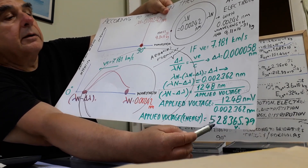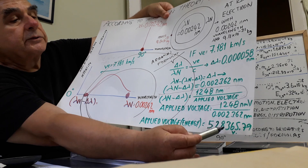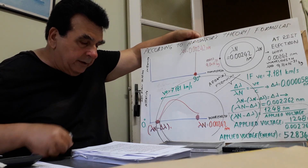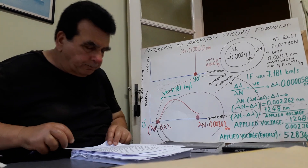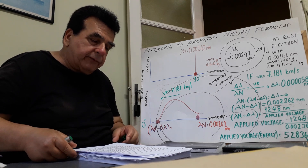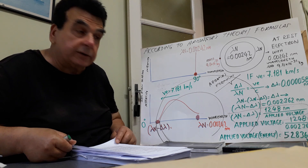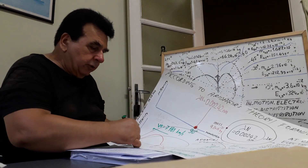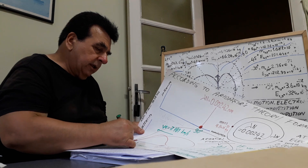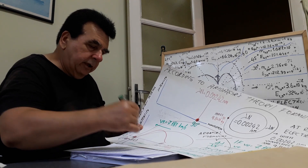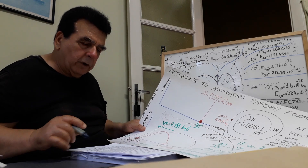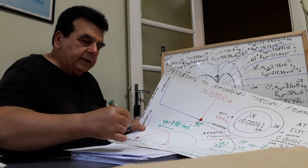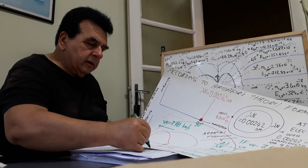That is 528,365.79 volts, or 525,110.68 electron volts. So I will write here: required energy in eV is 525,110.68 eV.